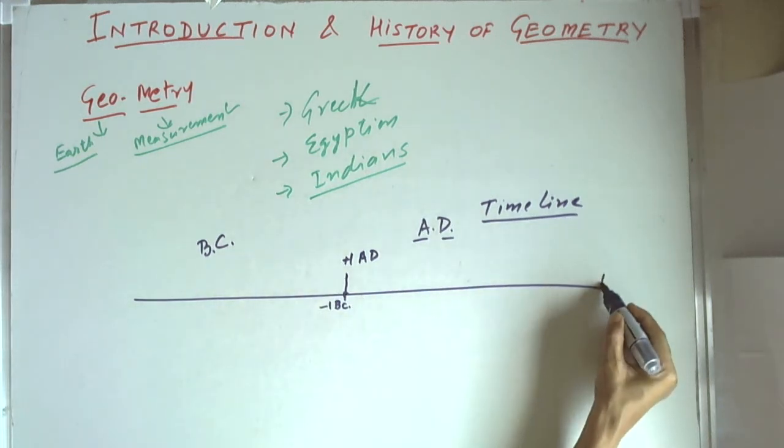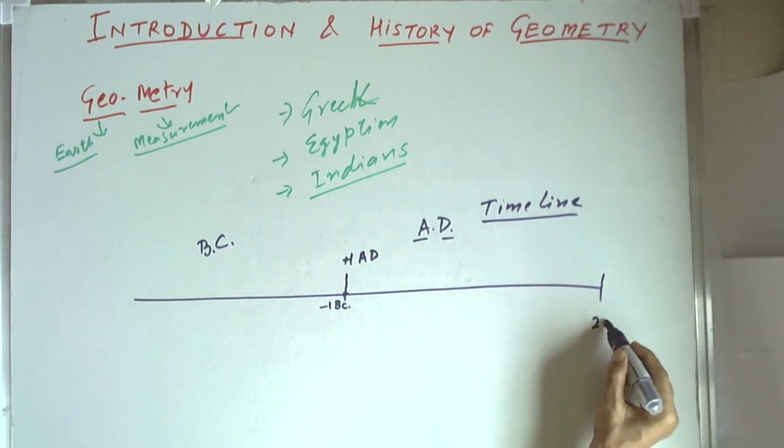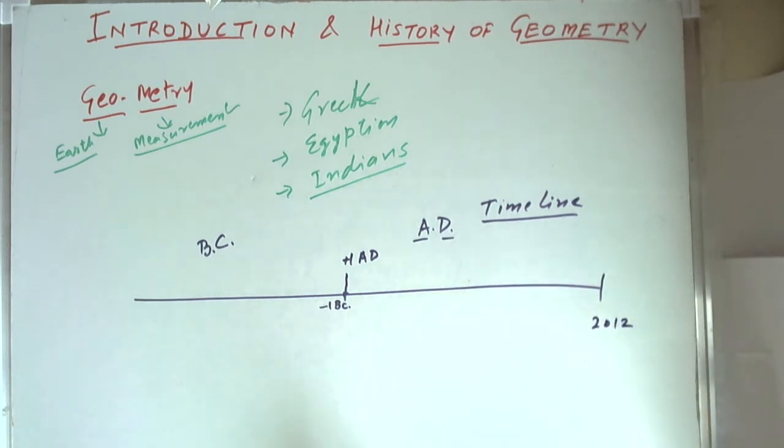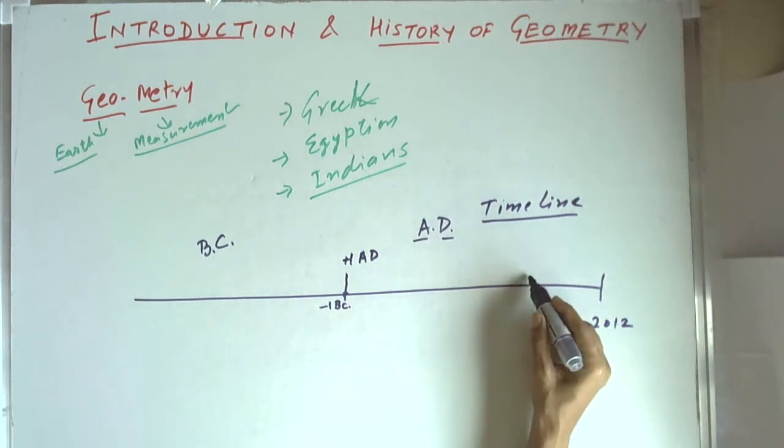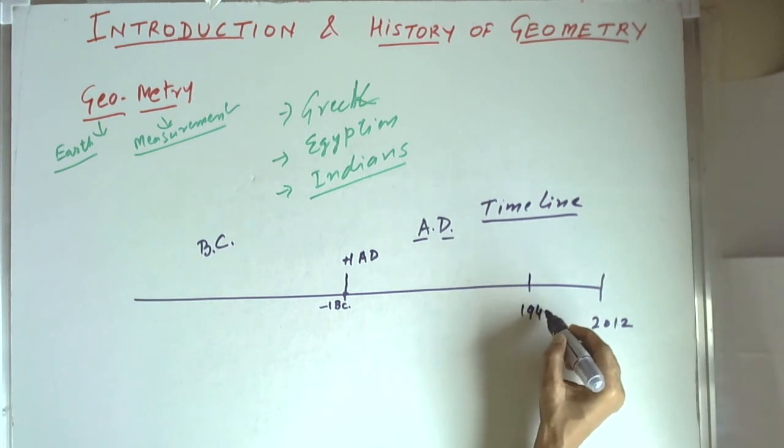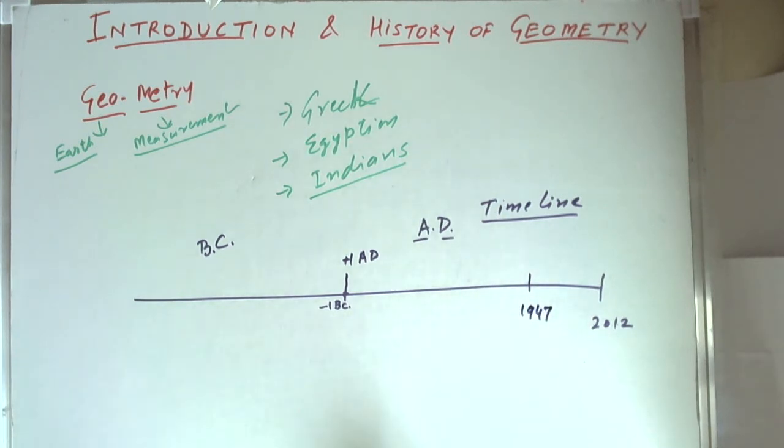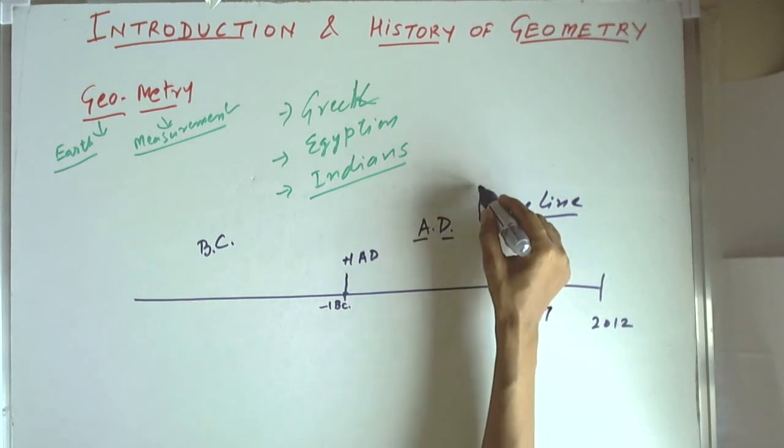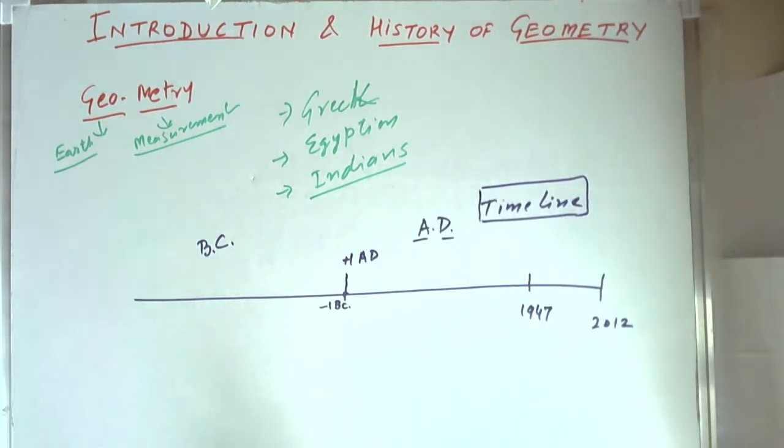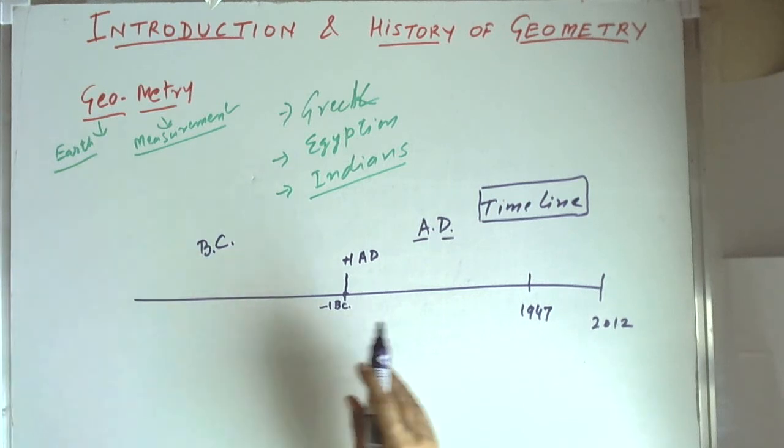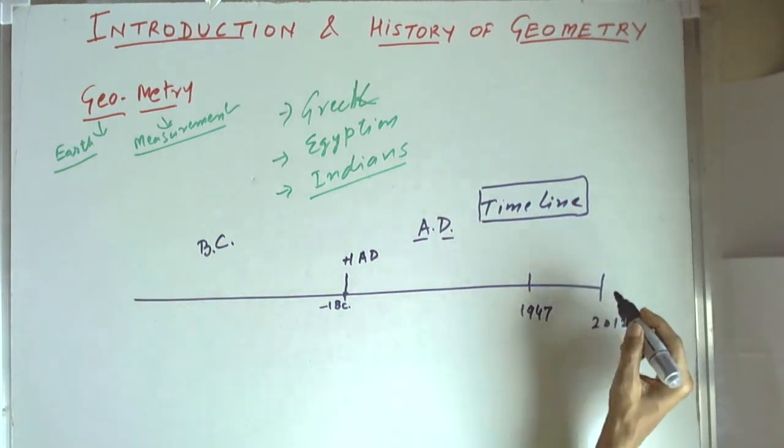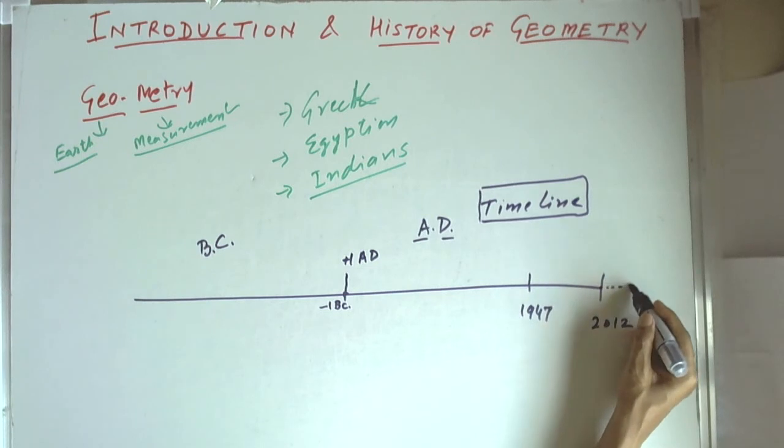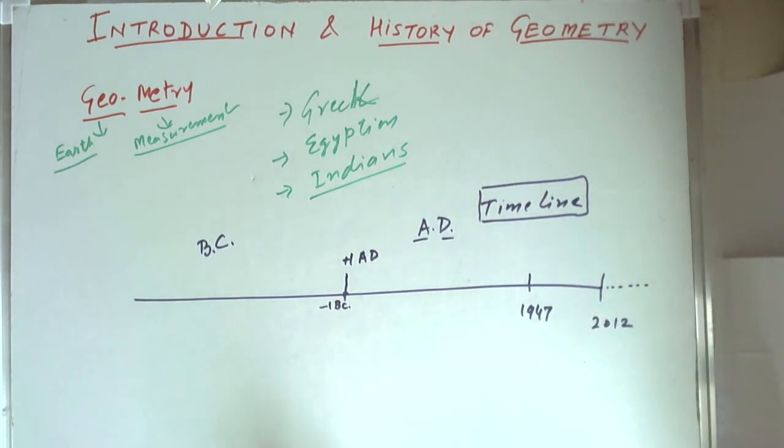For example, today we are in year 2012, so this means it is 2012 years after the birth of Christ. India got independence in 1947. When we study history, we basically put all the historical facts on the timeline, which indicates the time horizons.